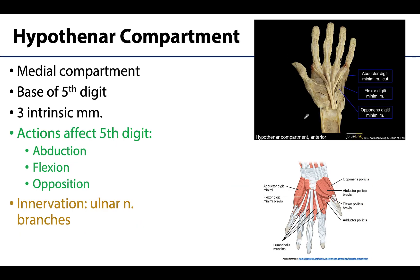There is a matching but smaller compartment on the opposite medial side called the hypothenar compartment. The names of its intrinsic muscles are almost exactly the same as the thenar compartment, but 'pollicis' is replaced with 'digiti minimi,' meaning smallest digit. The actions are the same as well: abduction, flexion, and opposition. This compartment is innervated by ulnar nerve branches, as you would expect for most intrinsic hand muscles.